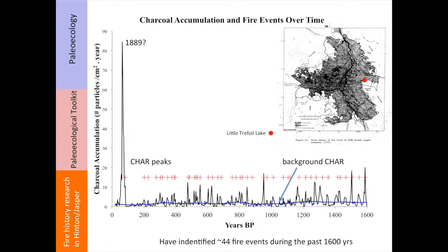The blue line represents a background charcoal input. There's charcoal coming into these lakes not just from right around the lake, but from extra-regional sources as well, producing this slowly varying background rate. Some people are now suggesting you can use that background charcoal level to look at biomass on the landscape at regional scales. Maybe this is representing an increasing biomass on the landscape as we go further back in time, and interestingly, around 1900 or so, this starts to uptick a little bit.